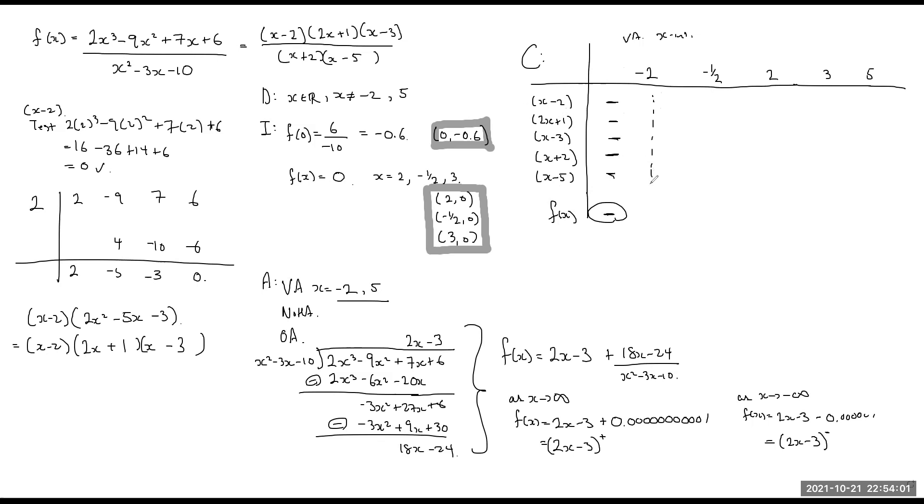Negative 2 is my vertical asymptote, so remind myself that. A number between these two, I'm going to try a negative 1. Negative 1 minus 2 is a negative. Negative 1 times 2 plus 1, that's a negative. Negative 1 is a negative. That's a positive. That's a negative.